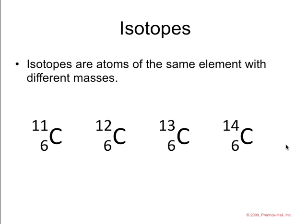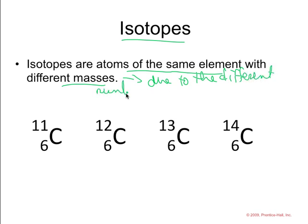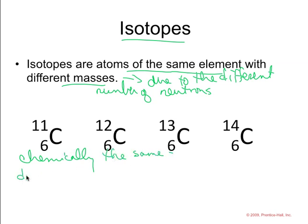Continuing our review, isotopes, you should remember, or hopefully know it now, isotopes are the atoms of the same element with different masses due to the different number of neutrons. It is important to note that they are chemically the same.